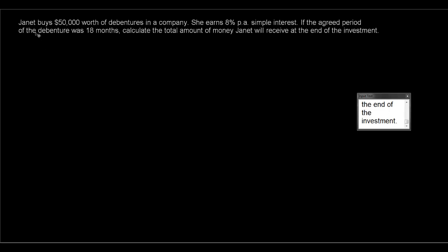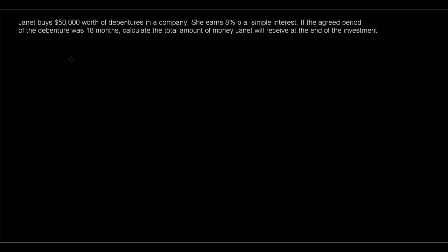Let's look at this example: Janet buys fifty thousand dollars worth of debentures in a company. She earns eight percent per annum simple interest. The agreed period of the debenture is eighteen months — calculate the total amount of money Janet will receive at the end of the investment. One thing to mention: if the company goes bankrupt, there's a possibility you could lose your money — but assuming the company doesn't go bankrupt, you should get your principal back. So write down: I = PRT over one hundred.